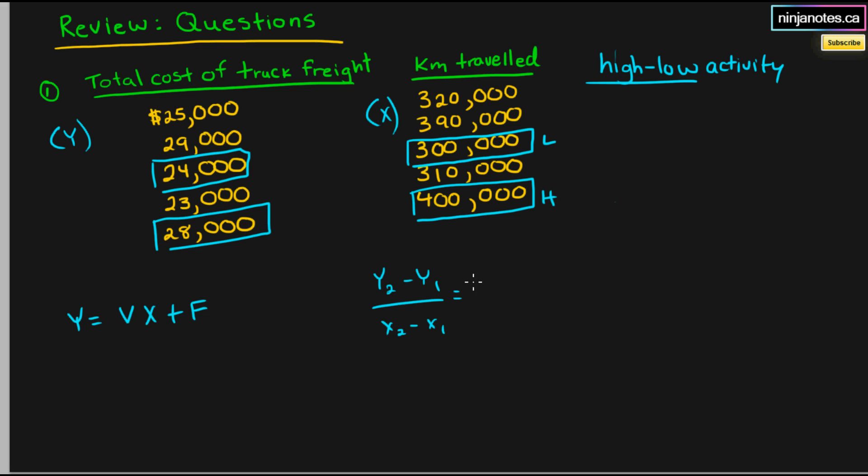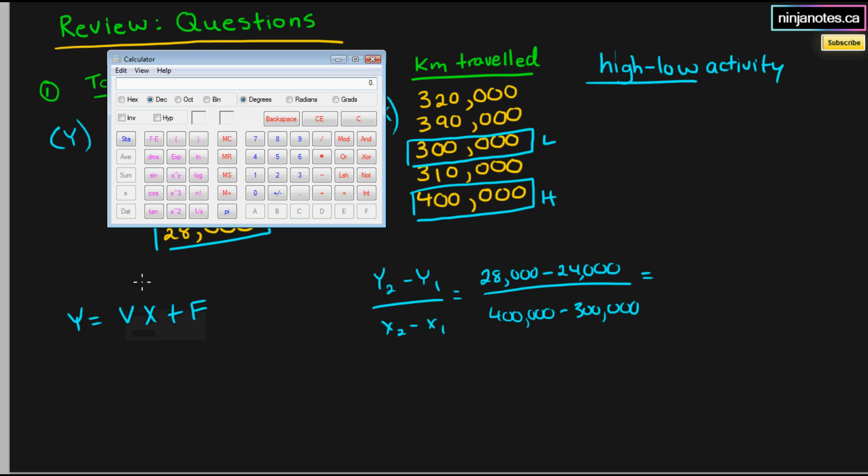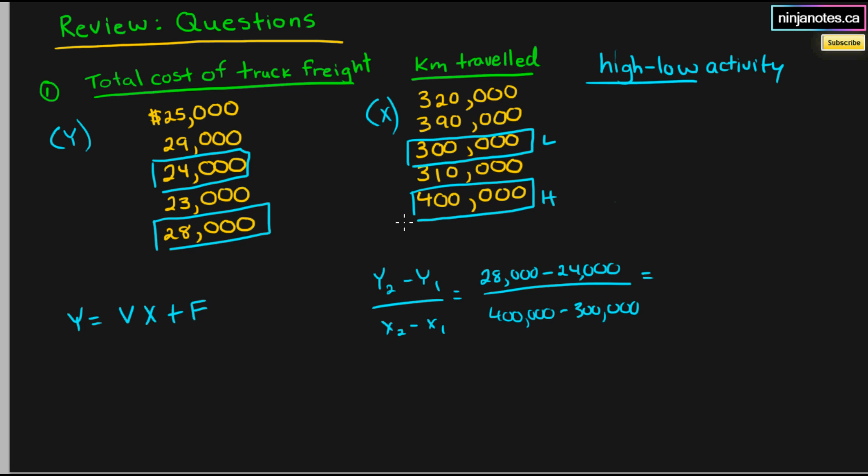Which is equal to 28,000 minus 24,000 divided by 400,000 minus 300,000. And that should give us 4,000 divided by 100,000 is 4 cents of variable cost.